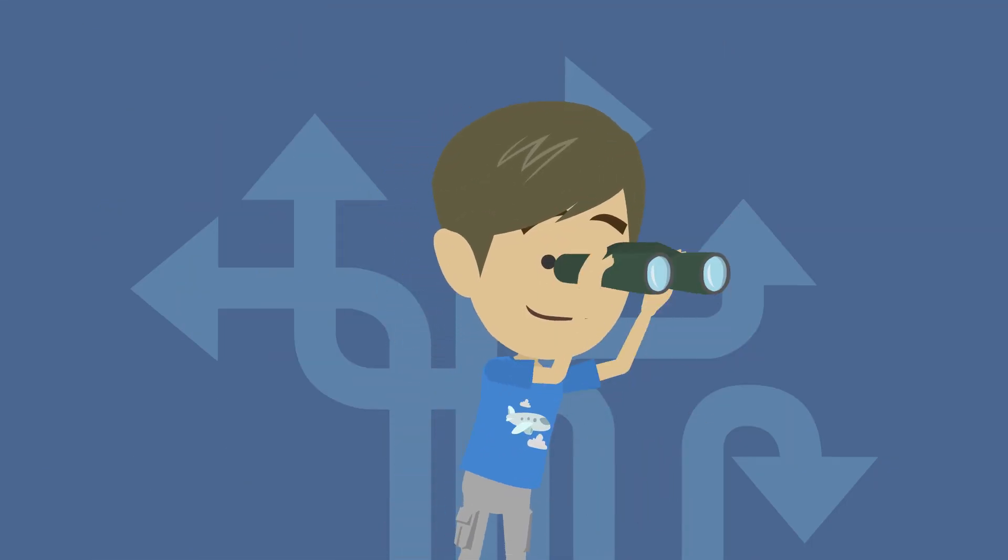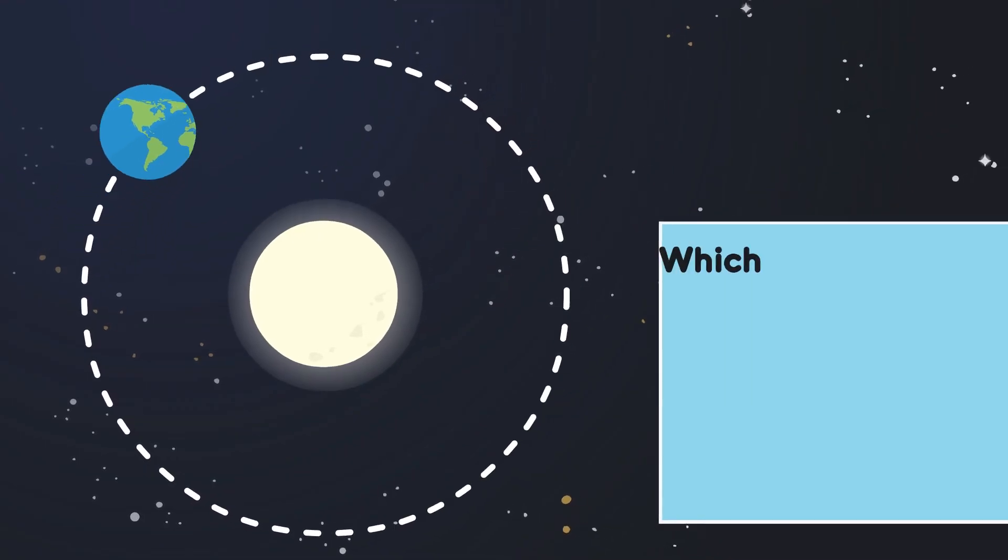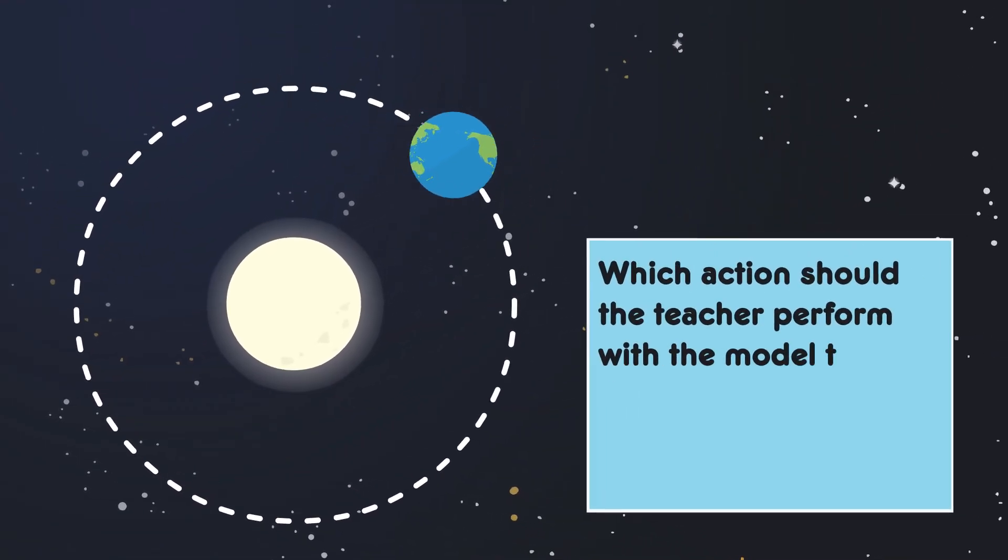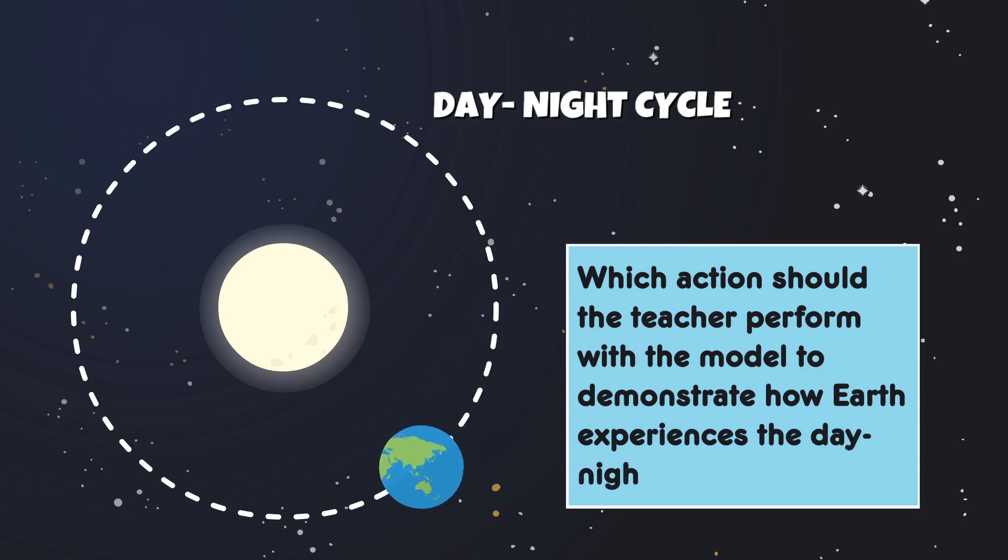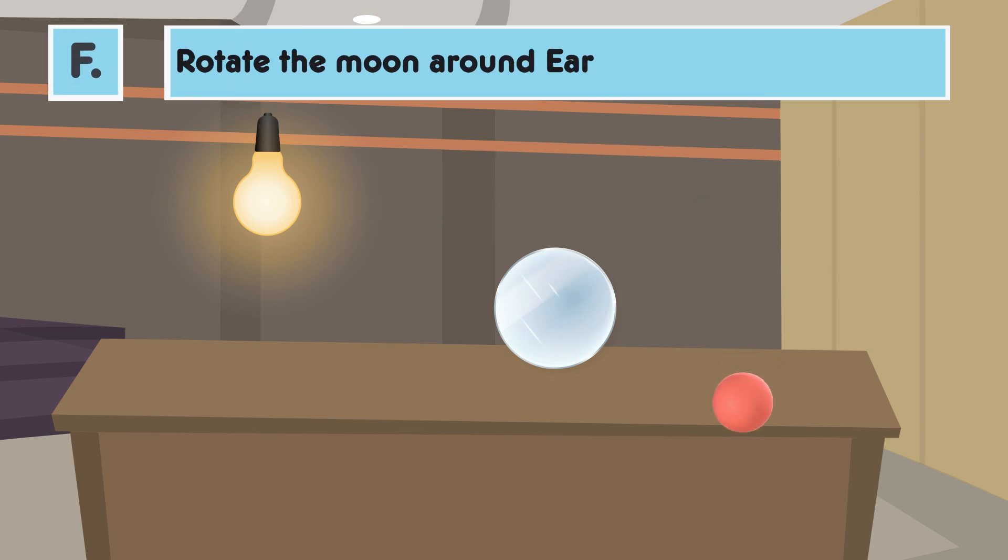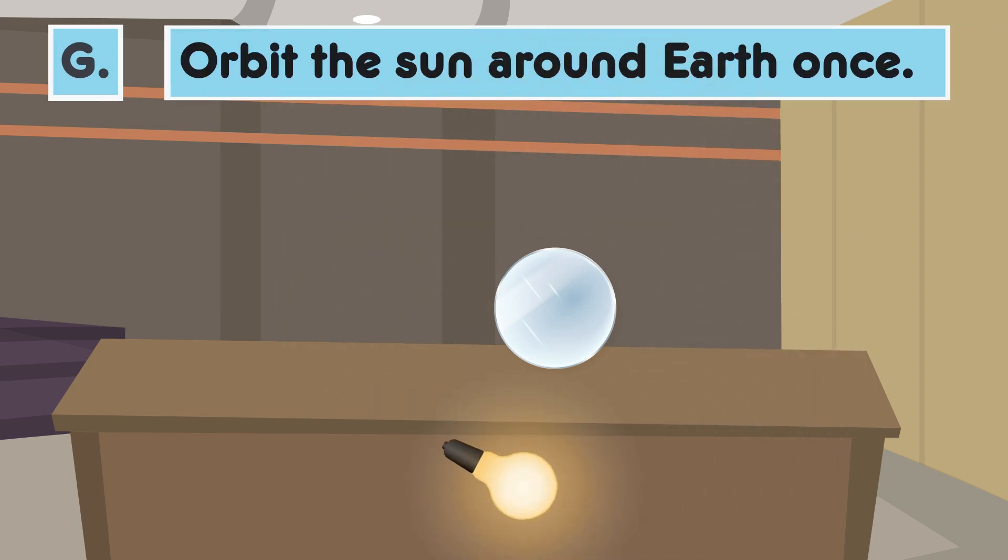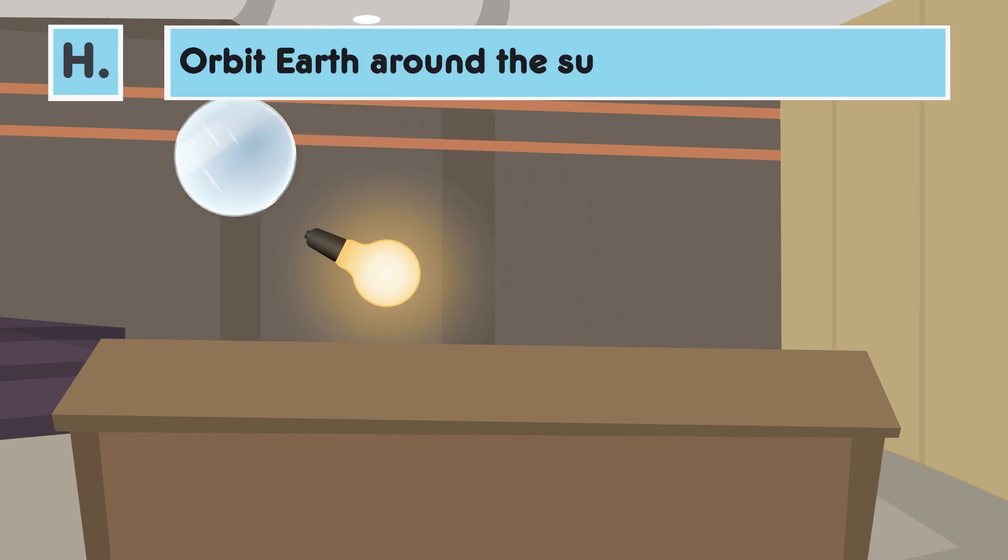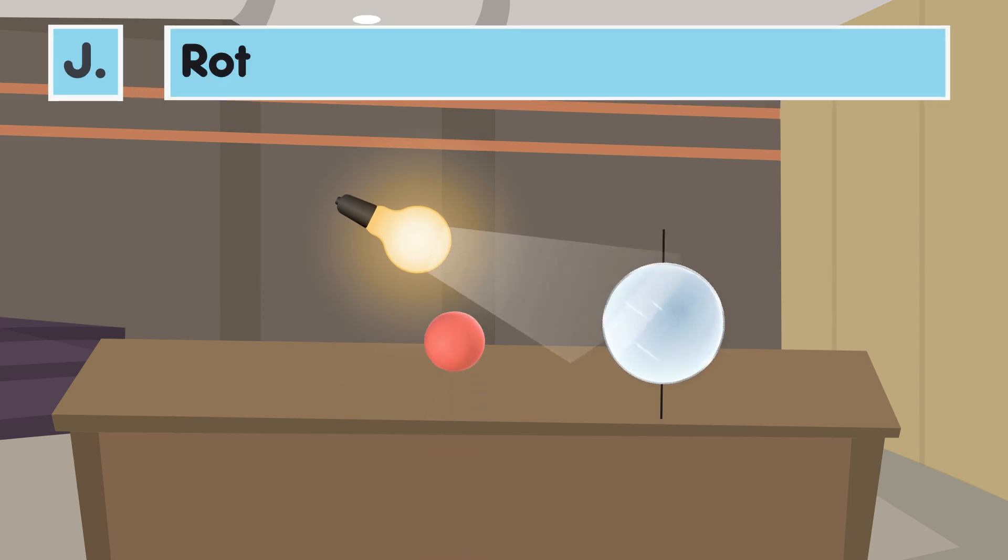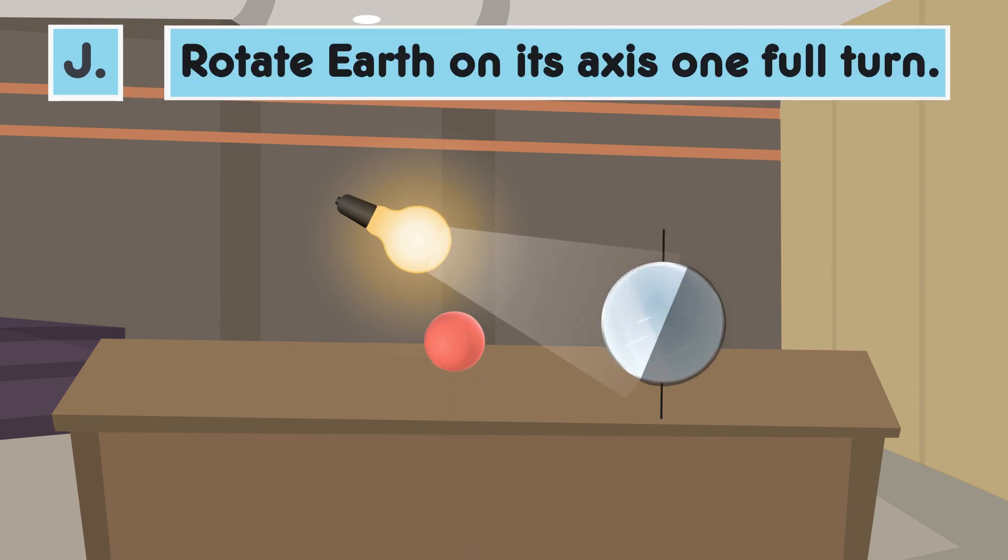Let's explore a specific question to guide our demonstration. Which action should the teacher perform with a model to demonstrate how Earth experiences the day-night cycle? F. Rotate the Moon around the Earth, one complete cycle. G. Orbit the Sun around Earth once. H. Orbit Earth around the Sun, one full revolution. J. Rotate Earth on its axis, one full turn.